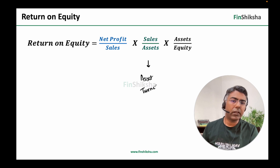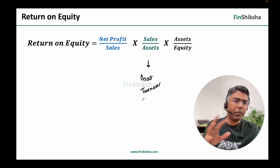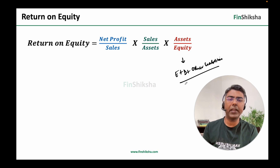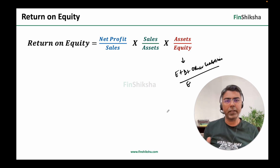Sales upon assets is the asset turnover ratio — how much sales is being generated per rupee of asset. And finally, if you think about total assets as equity plus debt, then assets upon equity effectively gives you equity plus debt plus other liabilities divided by equity. So assets upon equity is giving you an idea about the leverage factor — the more debt the company has, the higher assets upon equity will be.